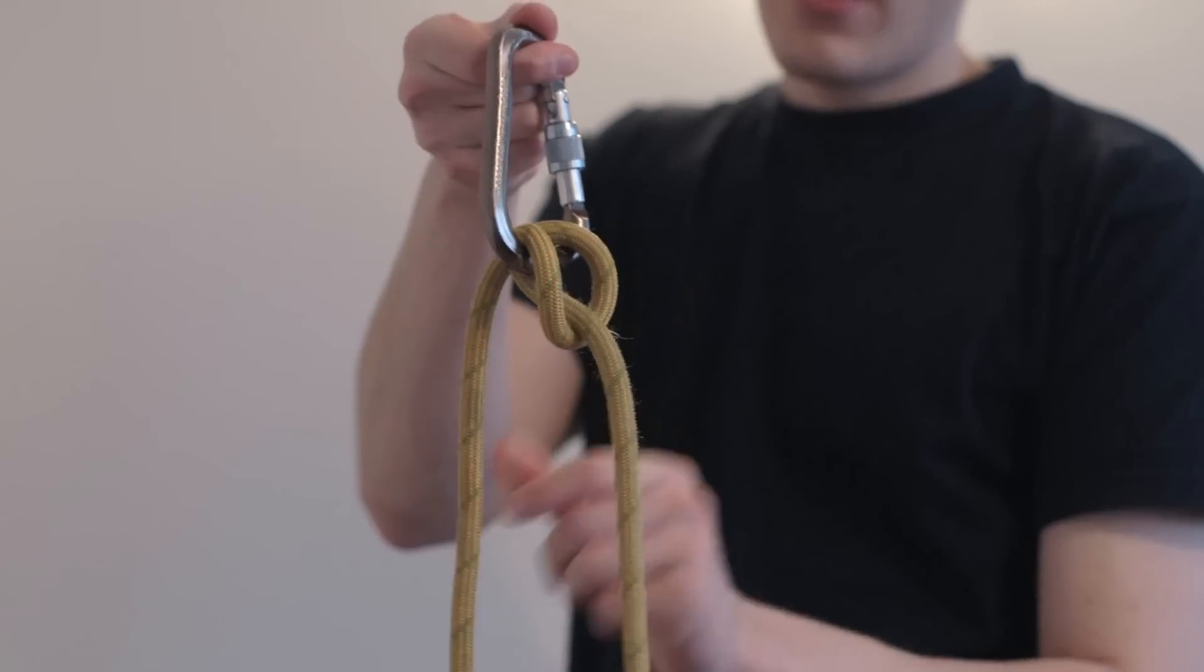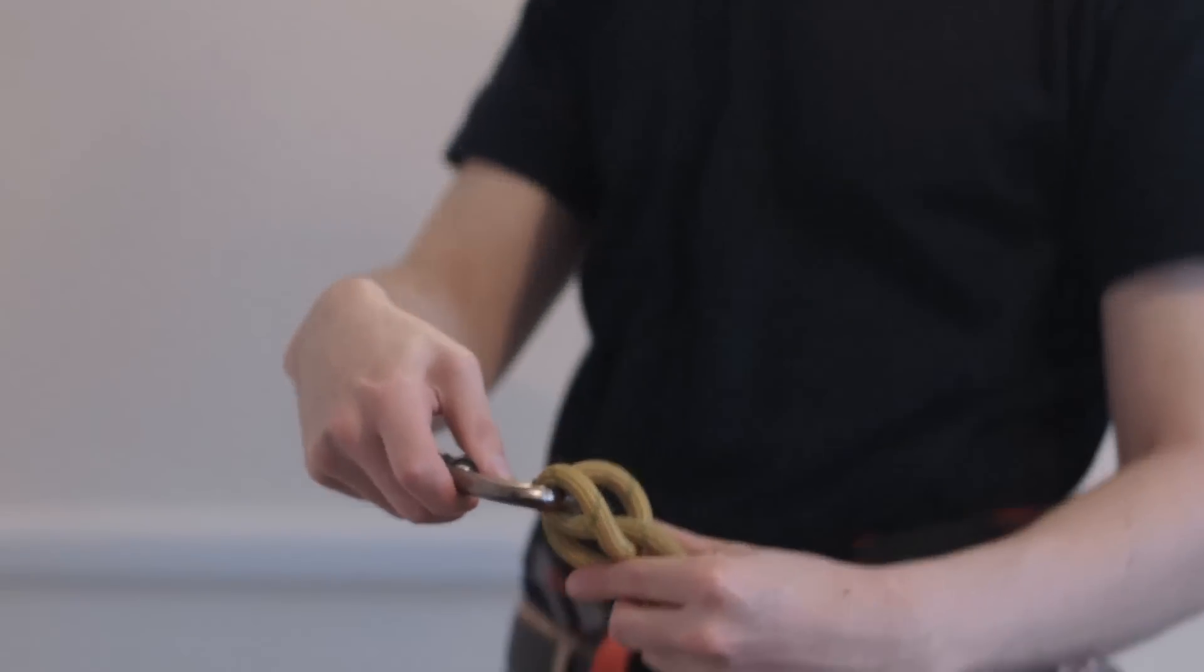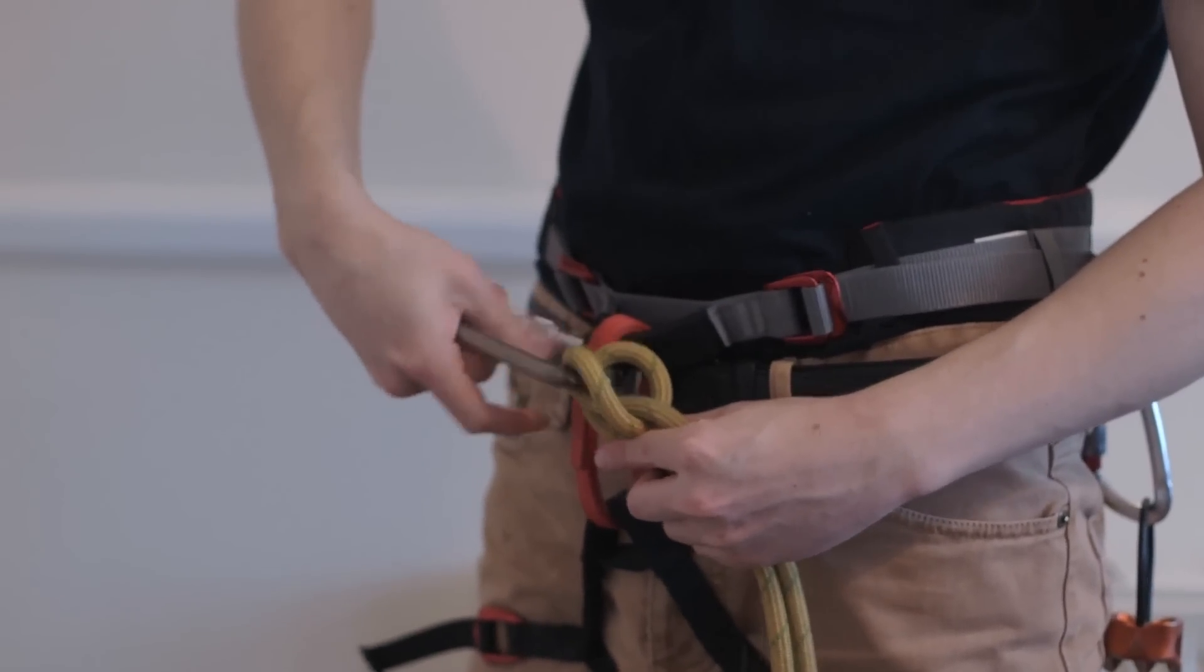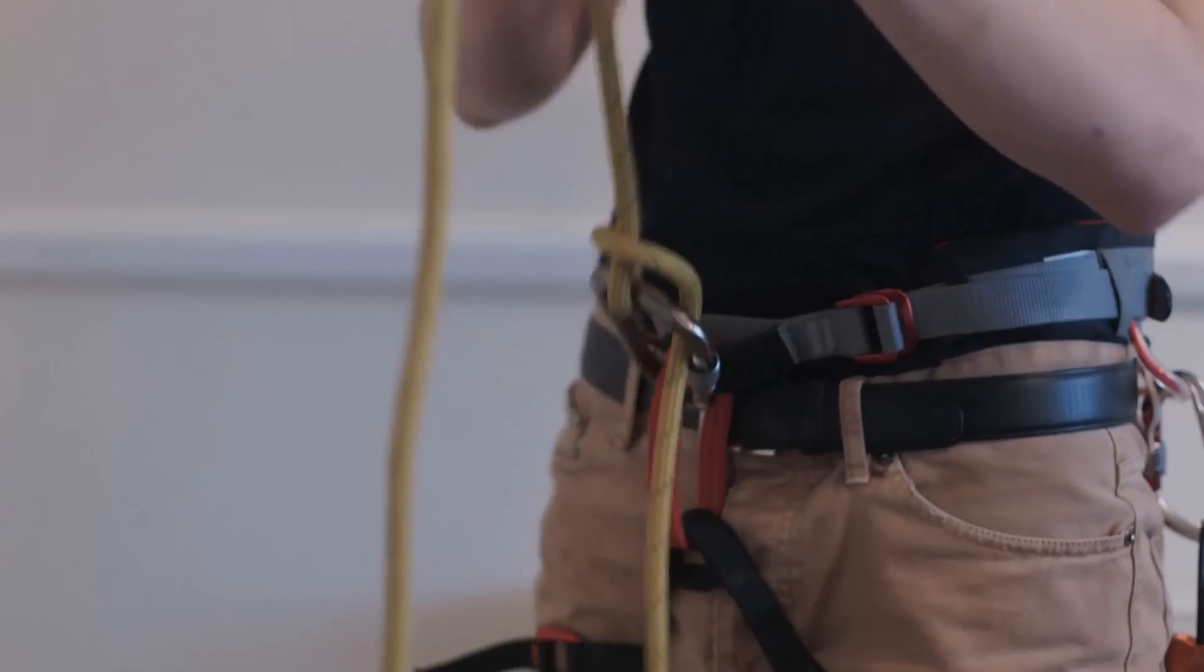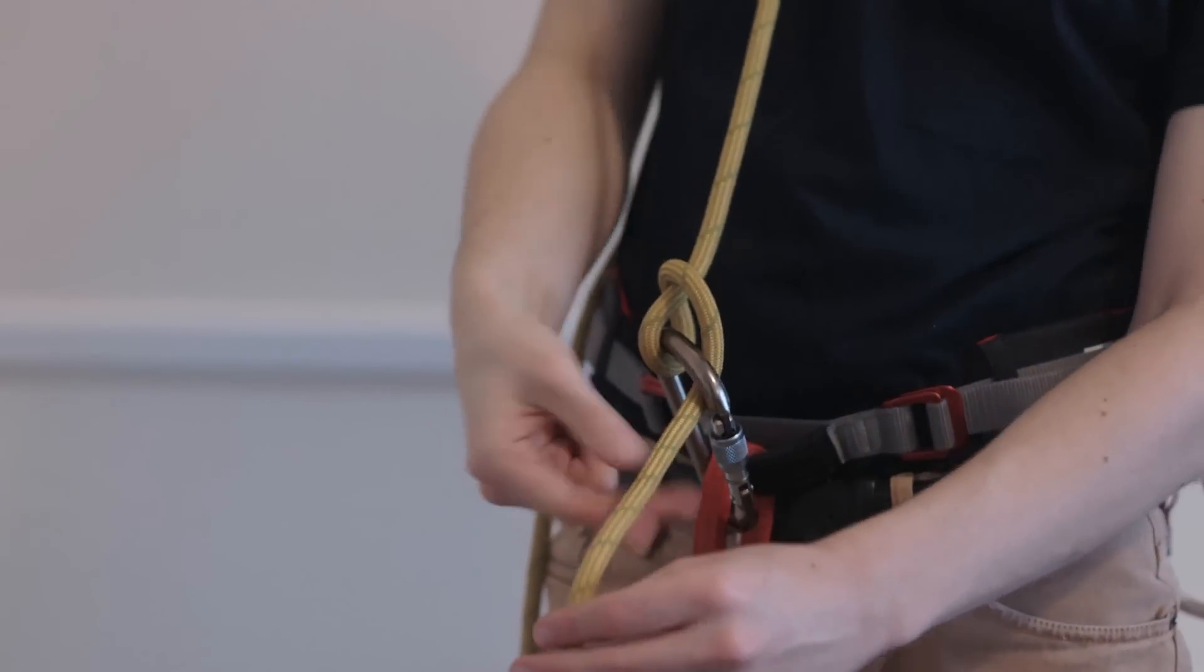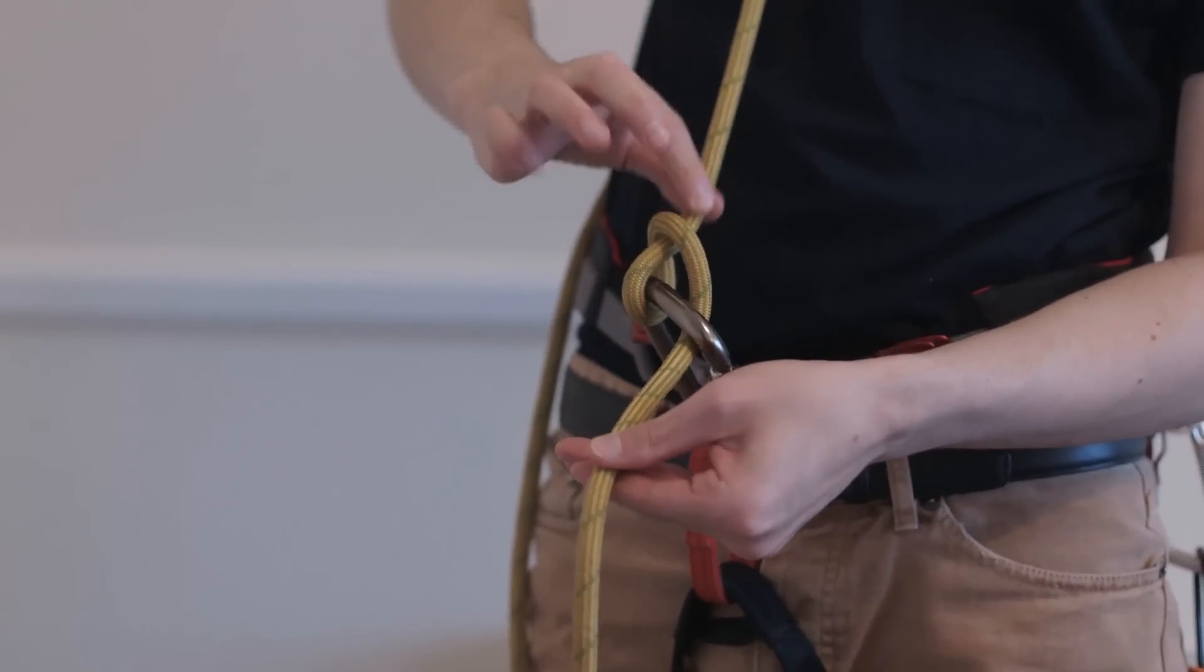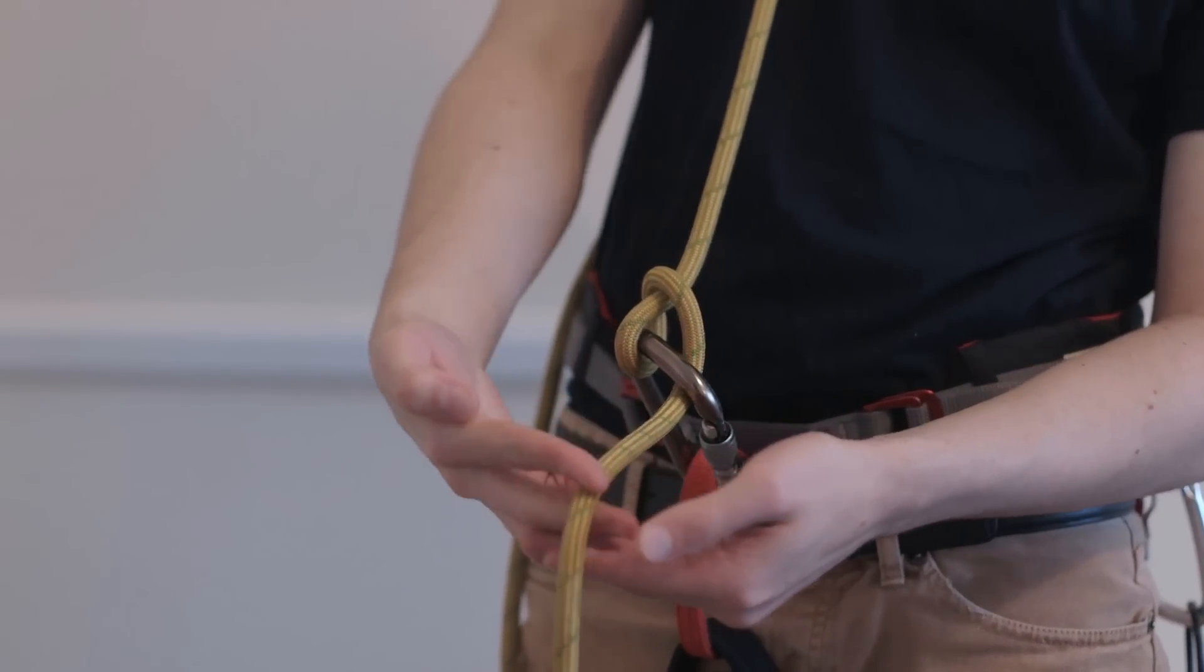Now you can belay off your harness. What I'll do is I'll just clip this onto my belay loop like so. Tighten that off. Now you can use this hitch to belay a top rope climber, so I'll just sling this over my shoulder. So now we have a climbing situation where this is the climber's end here, going up to the anchor and down, and this is the belayer side.